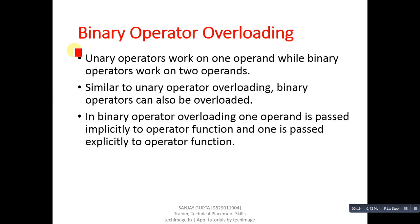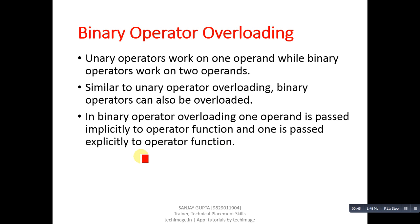Unary operators work on one operand while binary operators work on two operands. Similar to unary operator overloading, binary operators can also be overloaded. In binary operator overloading, one operand is passed implicitly to the operator function and one is passed explicitly. In unary operator overloading only one operand is passed implicitly, but in binary operator overloading one is passed implicitly and another explicitly.